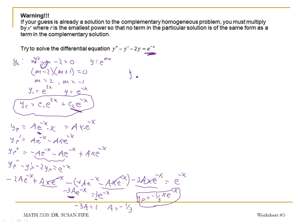So my general solution Y is my complementary solution plus my particular solution. Or, Y is C1E to the 2X plus C2E to the negative X plus YP, which is minus 1 third XE to the negative X. There we go.